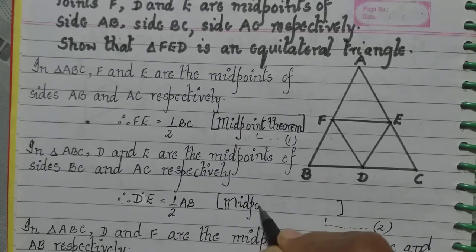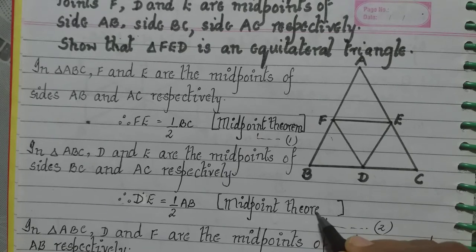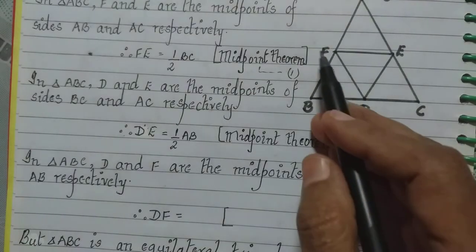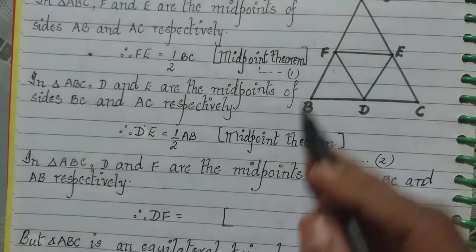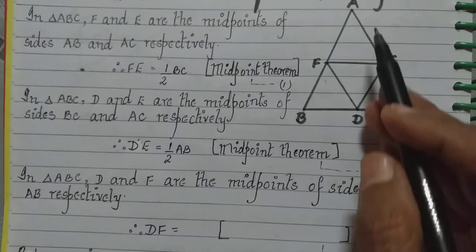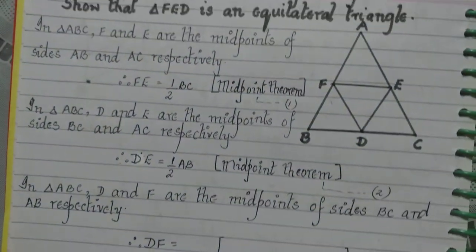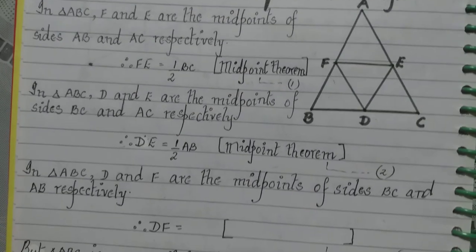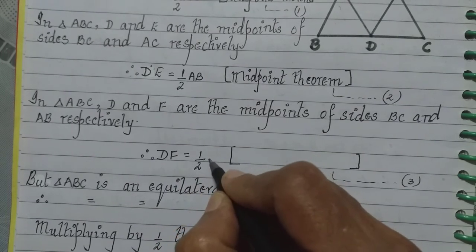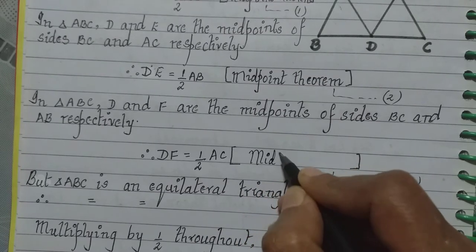So it is similar to the first question where we took all the three sides and found out that it is half of the third side. Same way now we go to the midpoints D and F. So in triangle ABC, D and F are the midpoints of the sides BC and AB of triangle ABC. Therefore, D and F will be half of the third side that is half of AC. So I write DF is equal to half AC and write the same reason midpoint theorem.